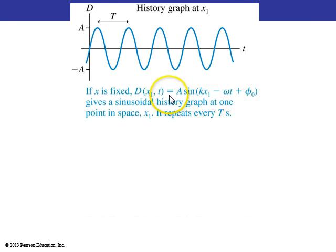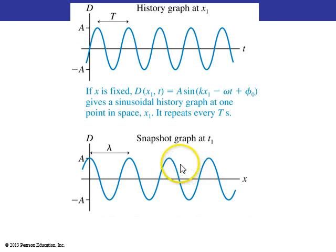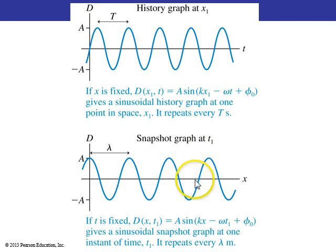So here's a history graph at some position X1 of a sinusoidal wave. And if X is fixed there, then this D is showing D of X1, T. So as T increases, you get this sine wave. The snapshot graph would be at some T1, let X increase, and again, you see this same sinusoidal shape. This one repeats every lambda meters, this one repeats every capital T seconds.